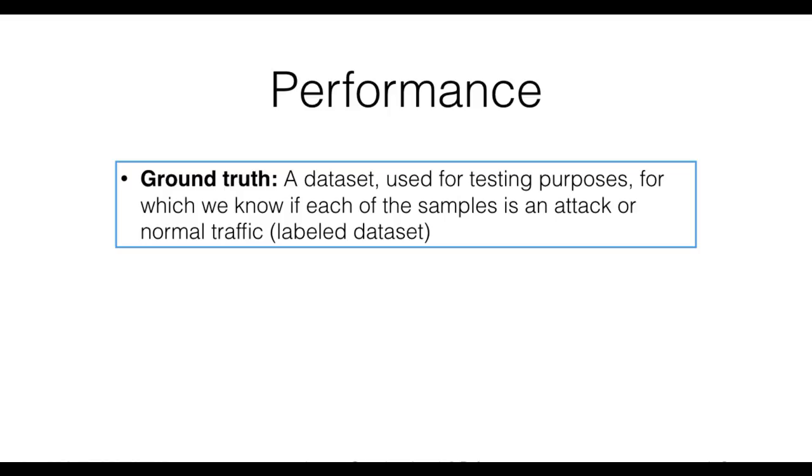To evaluate the performance of an IDS, we need two ingredients. First, we need a ground truth. A ground truth is a dataset for which we know if each sample, like a packet or a log entry or any other data your IDS works on, is an attack or not. A ground truth dataset is therefore a labeled dataset.